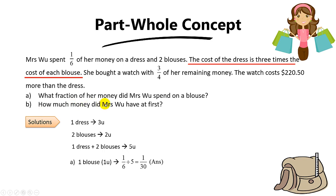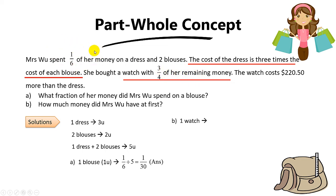For part B, the question asks how much money did Mrs Wu have at first. She bought a watch with 3 quarters of her remaining money. Her remainder is 1 whole minus 1/6, which is 5/6. So the watch costs 3/4 times 5/6, which equals 5/8 of her total money. To find the cost of 1 dress: the dress is 3 times the cost of each blouse, so 3 times 1/30 equals 1/10 of her money.